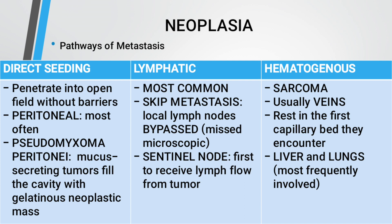Metastasis is the spread to distal sites and indicates malignancy. The pathways of metastasis are: direct seeding, lymphatic, and hematogenous. In direct seeding, tumor cells penetrate into the open field without barriers, most often in the peritoneal cavity. Pseudomyxoma peritonei is when mucus-secreting tumors fill the cavity with a gelatinous neoplastic mass.